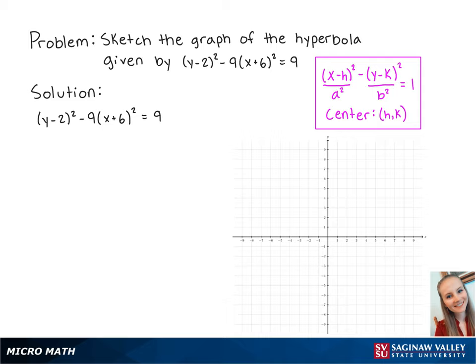So we're going to divide both sides by 9. After reducing the fractions, we have (y - 2)²/9 - (x + 6)²/1 = 1. Next, we're going to rewrite both of the denominators so that we have (y - 2)²/3² - (x + 6)²/1² = 1.